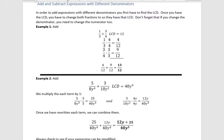In order to add or subtract with different denominators, you first have to find the least common denominator. Once you have the LCD, you change both fractions to have that LCD, and then you add those together and simplify if possible.